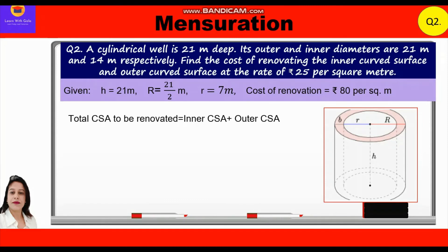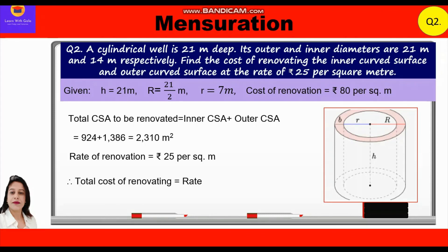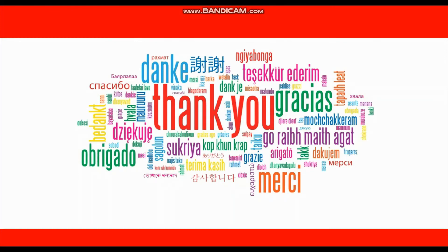Total curved surface area to be renovated = inner CSA + outer CSA = 924 + 1386 = 2310 meter square. Rate of renovation = rupees 25 per square meter. Total cost = 25 × 2310 = rupees 57,750. I hope you have understood these two questions. Thank you everyone.